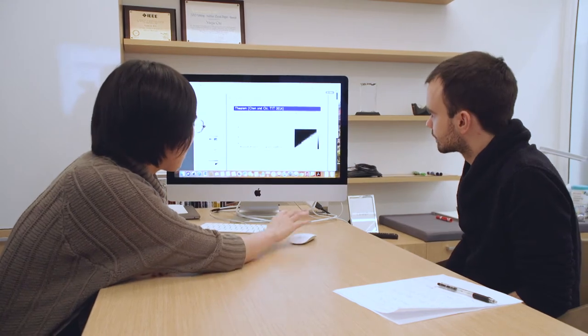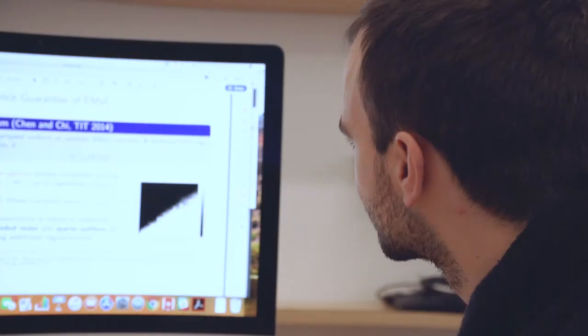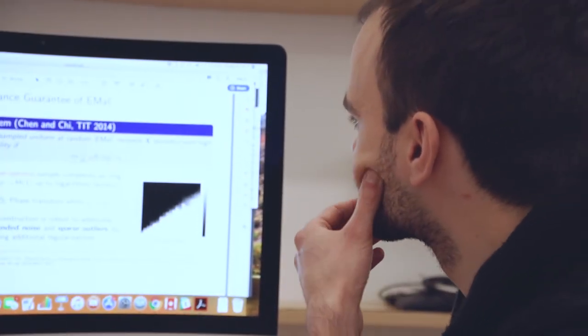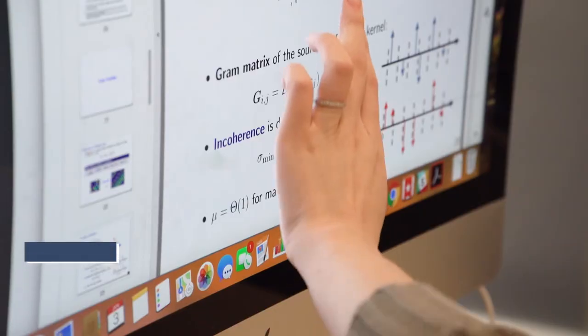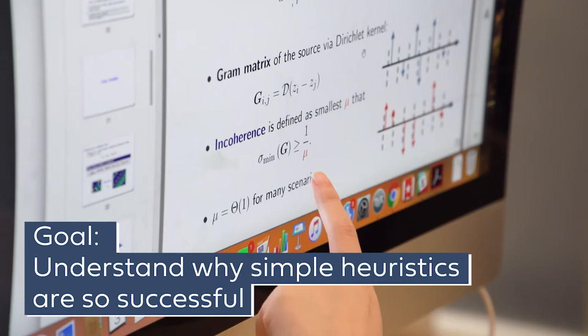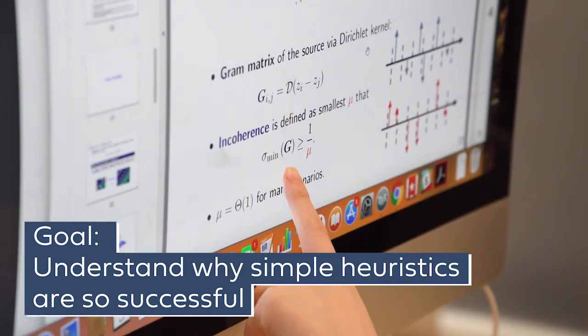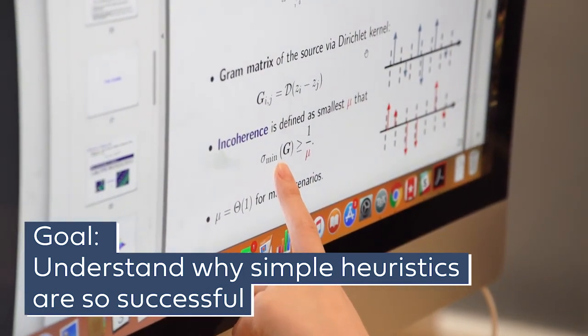Many of the big data algorithms people use in practice are heuristic algorithms that have been very successful but lack theoretical understanding. One of our goals is trying to understand why such simple heuristics work so well in practice. Can we theoretically analyze why they are so successful and hopefully our analysis can potentially shed light on how to design new algorithms that can improve their practical success.